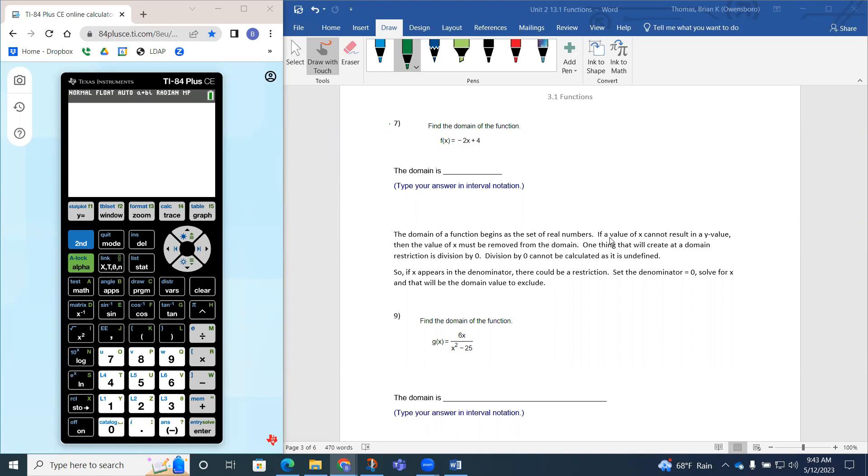So there's one thing that we cannot do. If the value of x cannot result in a y value, then the x value must be removed from the domain. So one thing that will create a domain restriction is division by 0. Division by 0 cannot be calculated and is described as undefined.